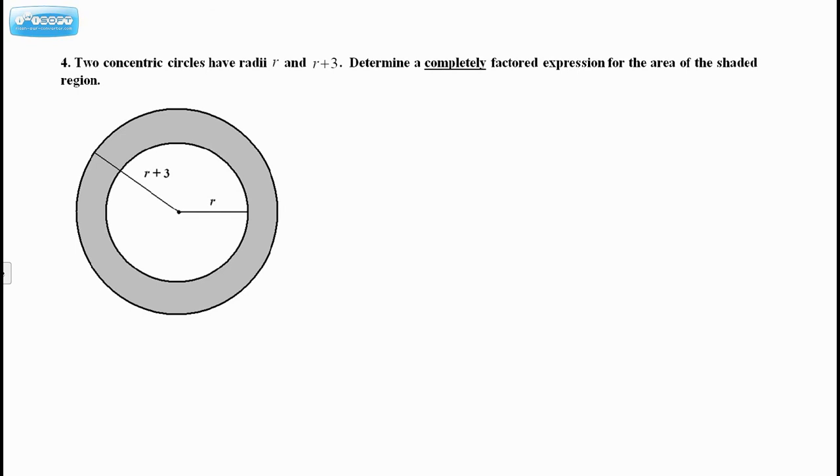Lastly, two concentric circles, concentric just means their centers are aligned, have radii R and R plus 3. So obviously the smaller circle has a radius R. The larger one is 3 units bigger, hence R plus 3. Determine a completely factored expression for the area of the shaded region.